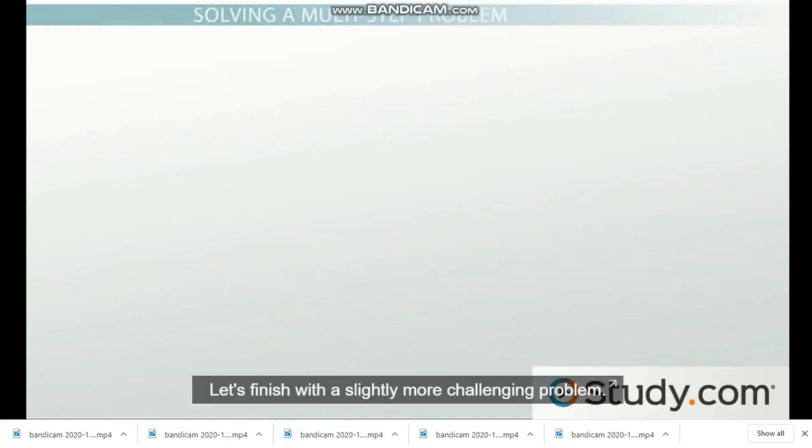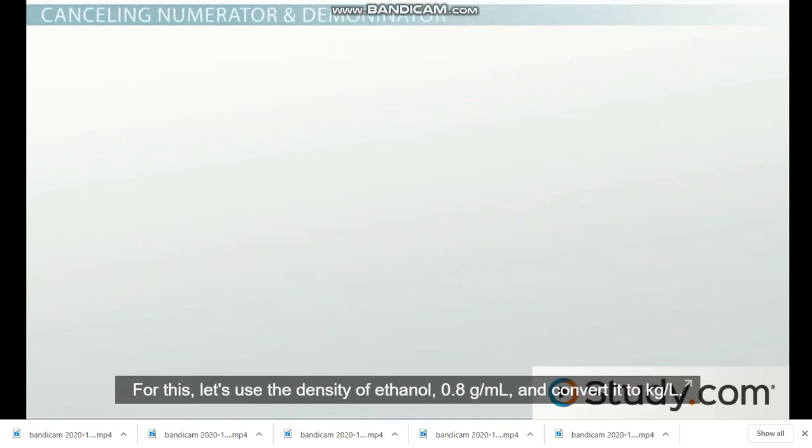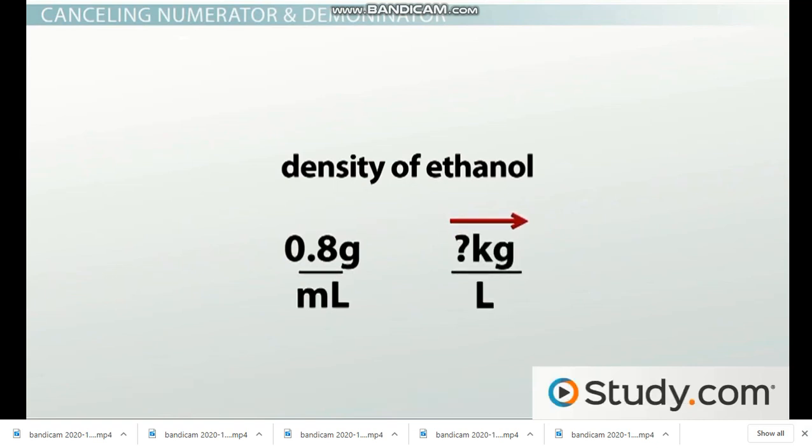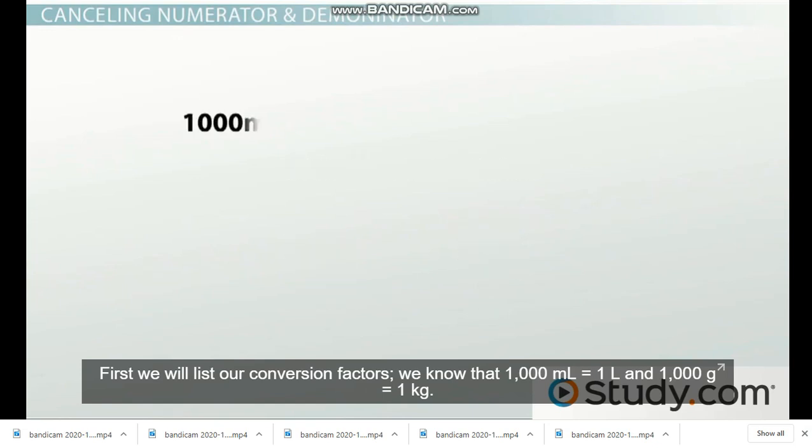Let's finish with a slightly more challenging problem. For this, let's use the density of ethanol, 0.8 grams per milliliter, and convert it into kilograms per liter. First, we will list our conversion factors. We know that 1,000 milliliters equals 1 liter, and 1,000 grams equals 1 kilogram.